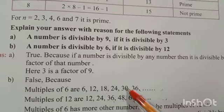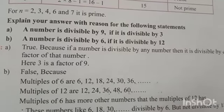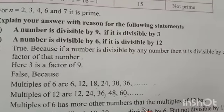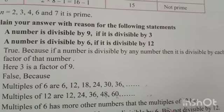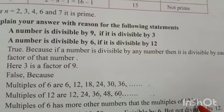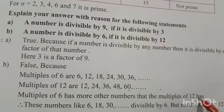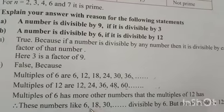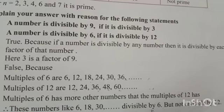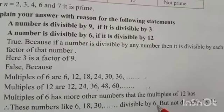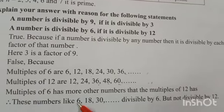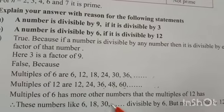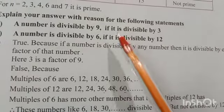Multiples of 6 have more numbers than multiples of 12. Numbers like 6, 18, 30 are divisible by 6 but these same numbers are not divisible by 12. So the statement is false.